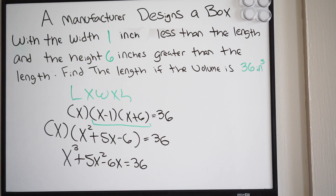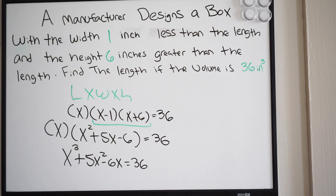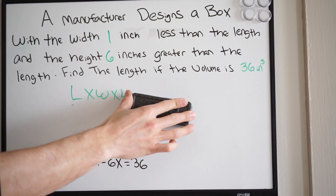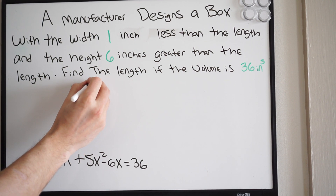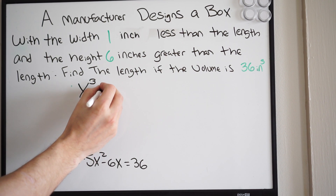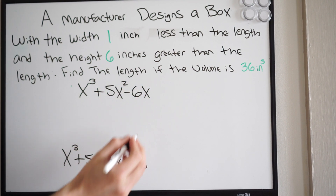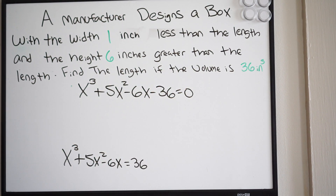We're solving for the zeros, so we need to move the 36 over and set the equation equal to zero. The final polynomial is x cubed plus 5x squared minus 6x minus 36, all equal to zero.